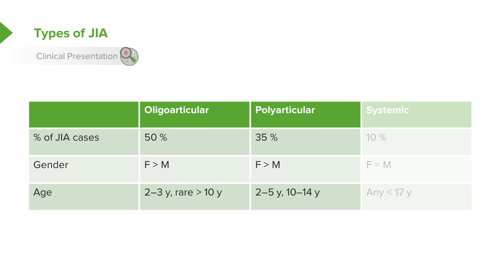Systemic JIA is the minority of cases — only about 1 in 10 — and there is no gender predominance. It can happen at any age, really up to under 17 years of age.